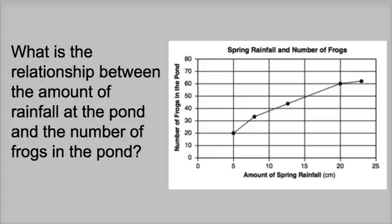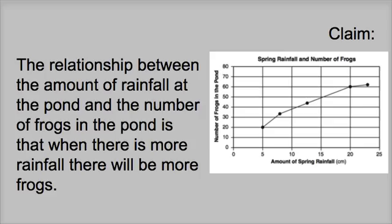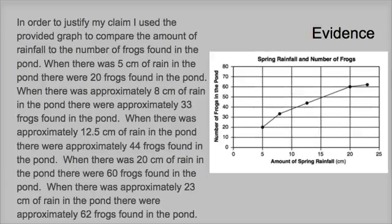We interpreted the data because a lot of times you're going to need to do that before you make a claim — otherwise how do you know how to answer it? Here is the claim we made: the relationship between the amount of rainfall at the pond and the number of frogs in the pond is that when there is more rainfall, there will be more frogs. The evidence basically went through the graph — when there was five centimeters of rain, there were 20 frogs found in the pond — and I talked about each of the five years of data.